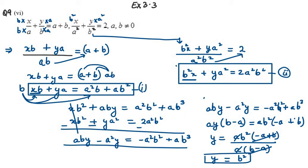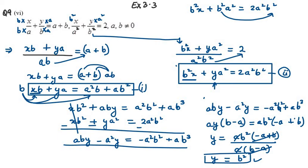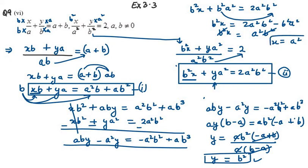Now we need to find the value of X. You can use either equation 1 or 2. I will use the second equation. Substituting Y equals B², we get B²X plus B² times A² equals 2A²B². Bringing B²A² to the right-hand side gives B²X equals 2A²B² minus B²A², which equals A²B². Dividing both sides by B², B² cancels out and X equals A². So X equals A². This is your answer for the sixth part.